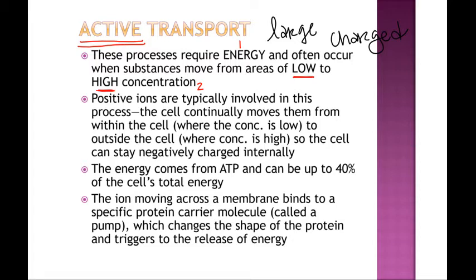It might seem like it doesn't make sense — if you already have a whole bunch of a molecule inside the cell, why would the cell want to get more? Usually active transport in that case is involving electricity. In order for nerves and muscles to communicate there has to be an electrical current, and to generate that current we need to move charged particles around. So if we need to move ions in or out of cells, we use active transport through a particular kind of protein called an ion pump, similar to the protein channel from facilitated diffusion but in a slightly different shape.